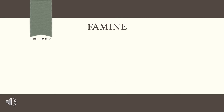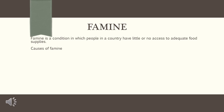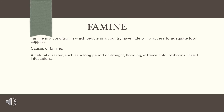Famine is a condition in which people in a country have little or no access to adequate food supplies. Causes of famine: a natural disaster, such as a long period of drought, flooding, extreme cold, typhoons, insect infestations, or plant disease, can result in a famine.